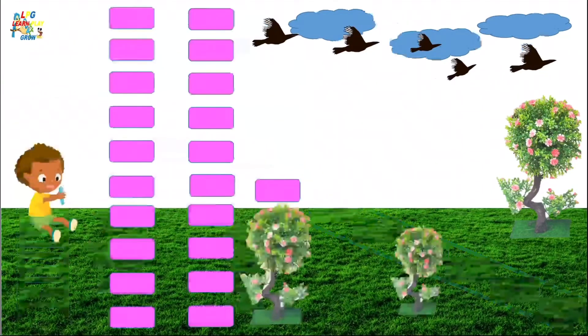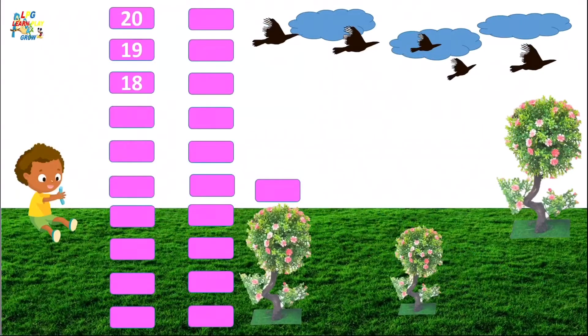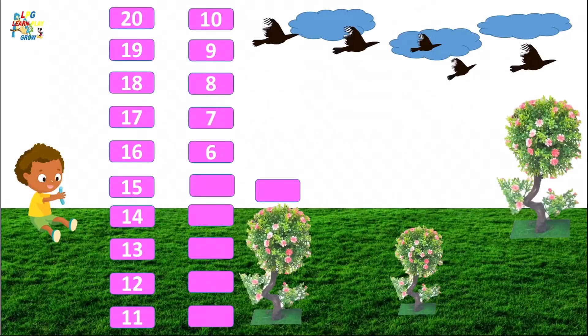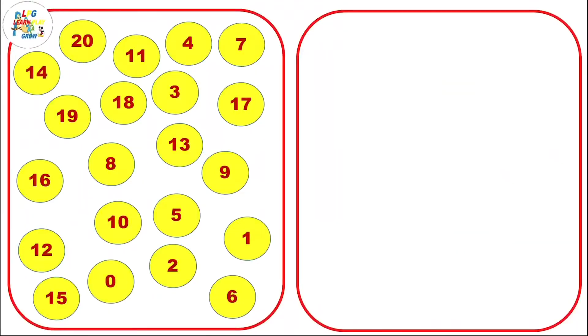Now one more time. 20, 19, 18, 17, 16, 15, 14, 13, 12, 11, 10, 9, 8, 7, 6, 5, 4, 3, 2, 1, 0. Now let's play a game. We will find the number and arrange in backward order.